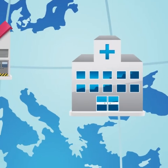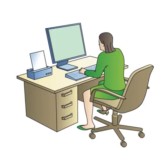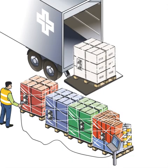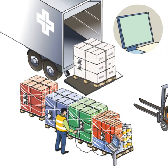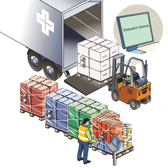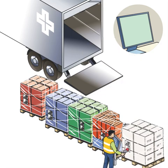The buyer receives the dispatch advice before the delivery arrives and prepares to receive it. If necessary, the buyer reserves a time slot for the truck at the delivery dock, allocates warehouse locations to store delivered products, and records traceability data. When the truck arrives, the receiver scans all the barcodes. The IT system compares the products received to the dispatch advice and reconciles them with the order, detecting any errors. Products that have not been ordered, not correctly identified, or damaged in transport are recorded as rejected. The system generates a receiving advice including any rejected items and sends it to the seller.